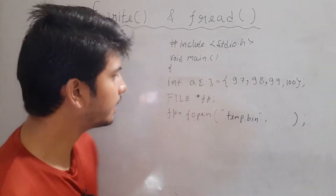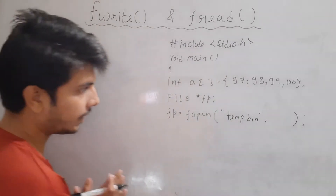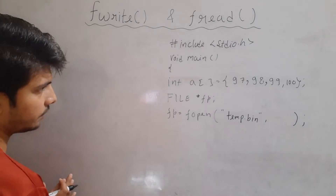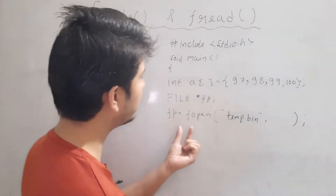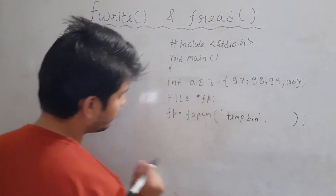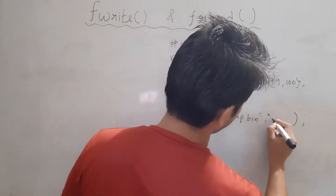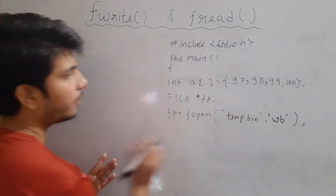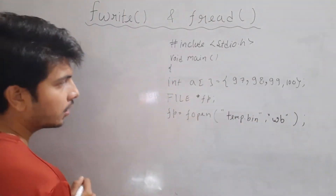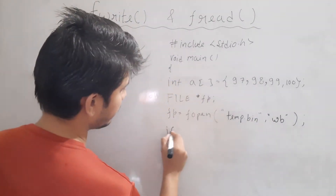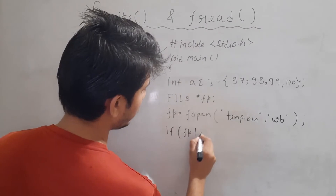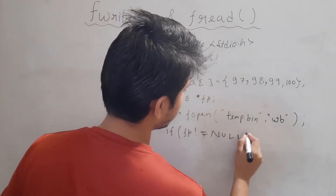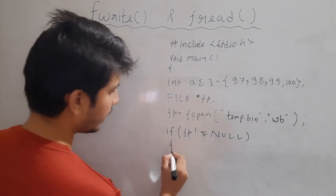Now, let's say we want to write binary data, and to write binary data we use the fwrite function. First of all, I will open the file with fopen with the mode 'wb'. wb means writing in binary mode. Then I will check if fp is not equal to null, which means the file has been successfully opened.